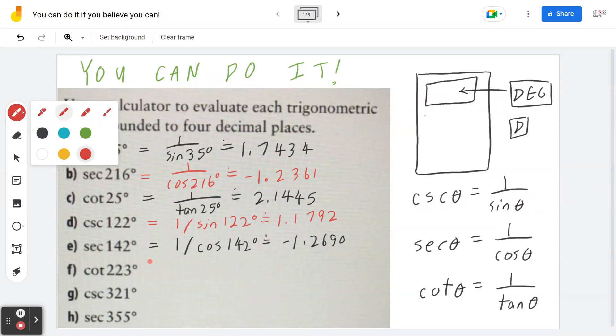Again, if I go to the next part, part F, cotangent of 223 degrees is 1 divided by tan of 223 degrees, which is approximately 1.0724.